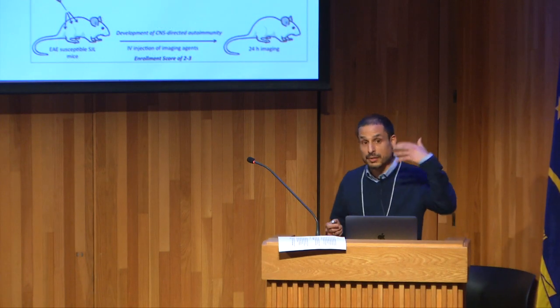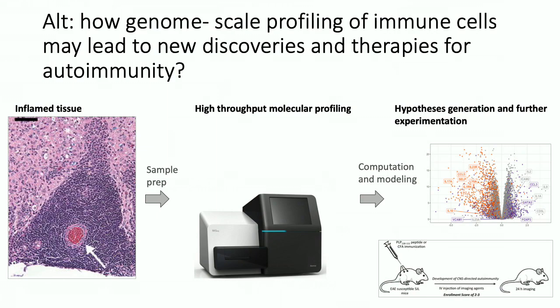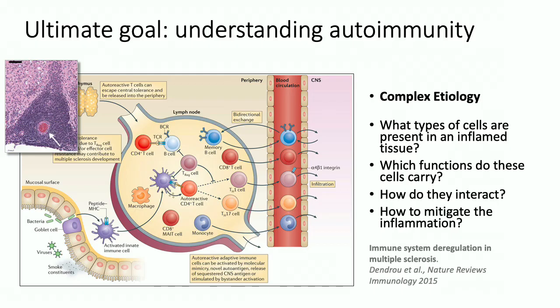The mental image I want you to have is this overall scenario where we have some inflamed tissue that we're interested in studying, and we put it through some instrumentation where we can generate high-throughput molecular profiling of all sorts of molecules — I'm going to specifically talk about RNA today. With this data, we process it, do some computation and statistics, and come up with hypotheses that lead scientific progress, new experiments, and conclusions about the system. In my case, we do a lot of thinking about autoimmune diseases.